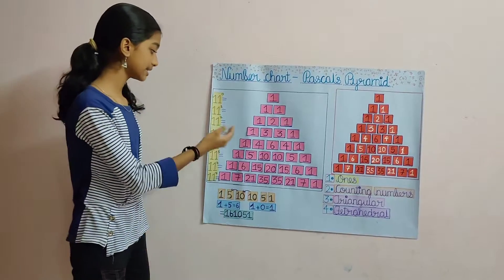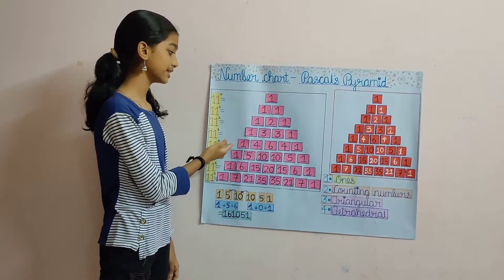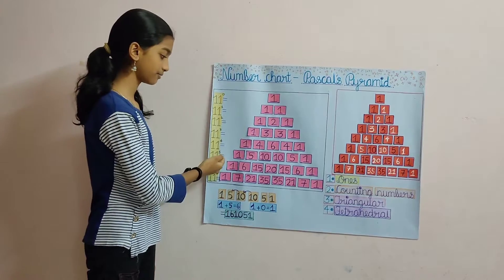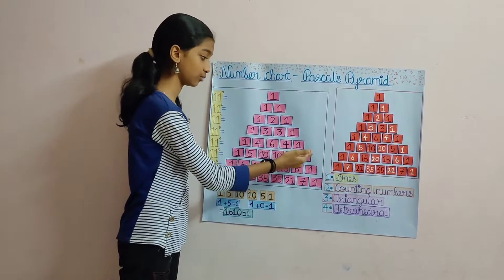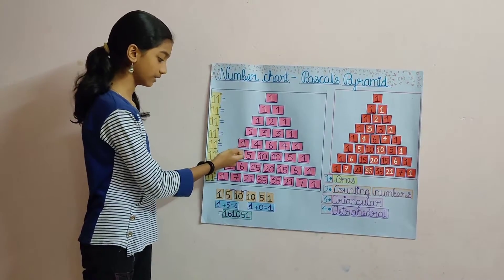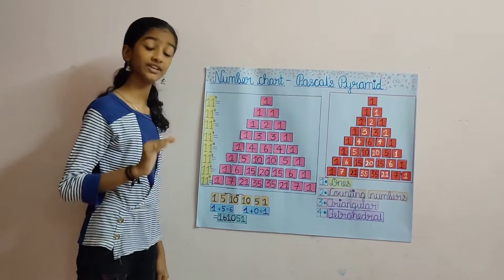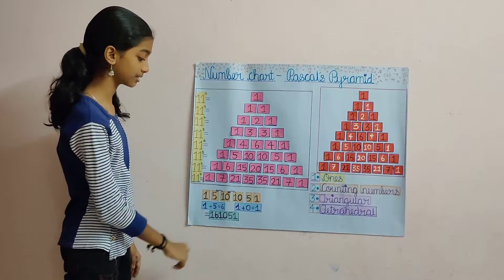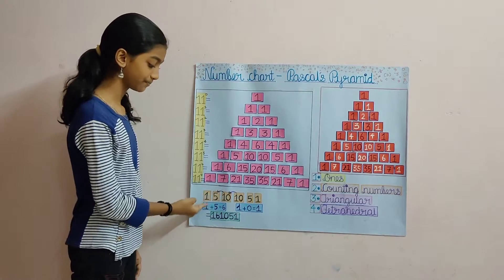You can see that 11 to the power of 4 is 1, 4, 6, 4, 1 and 11 to the power of 5 is 1, 5, 10, 10, 5, 1. From 11 to the power of 5 onwards, there are some two-digit numbers.